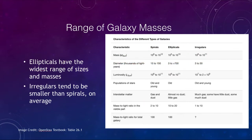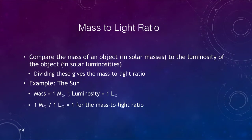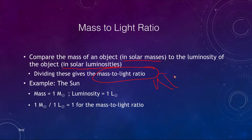The mass-to-light ratio compares the mass of an object in solar masses to the luminosity of an object in solar luminosities. If we divide those we get the mass-to-light ratio. Using the sun as an example: the sun has a mass of one solar mass and a luminosity of one solar luminosity by definition, so dividing one by one gives us a mass-to-light ratio of one. That's a way to compare how much mass and how much light things are giving out.